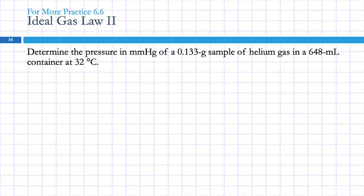So there's one more here. Determine the pressure in millimeters of mercury of a 0.133 gram sample of helium gas in a 648-milliliter container at 32 degrees Celsius. So we have a mass, we have a volume and a temperature, and we want the pressure in millimeters of mercury. Again, there's nothing changing, right? And so that's what clues us in, aside from the title up there, Ideal Gas Law, that we're going to use the ideal gas law for this problem. So I'm going to take these numbers and I'm going to write them down: 0.133 grams of helium, 648 milliliters, and 32 degrees Celsius.